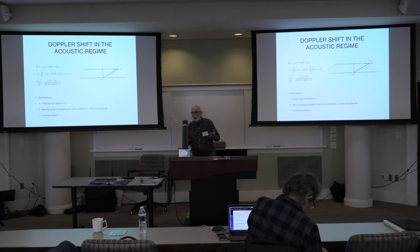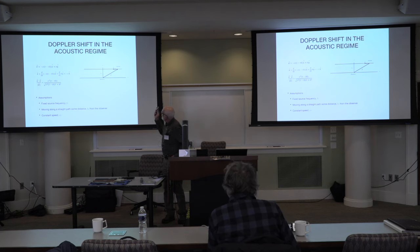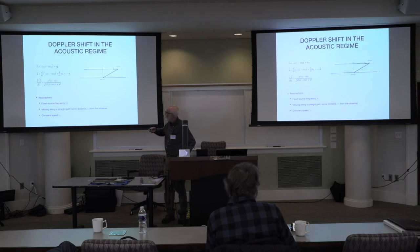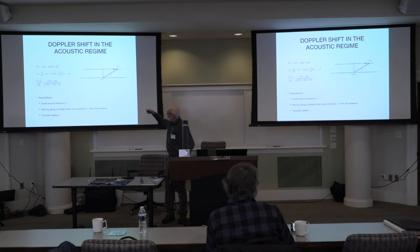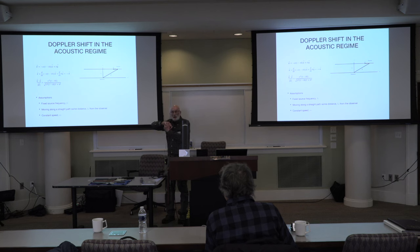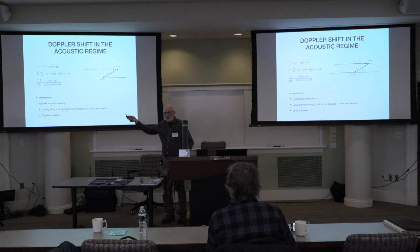It's a simple model. I have a sound source of fixed frequency moving along a straight path some distance away from the observer. By inspection, you can get the position vector; the first time derivative gives you the velocity vector. The scalar product, divided by the length of the position vector, gives you the component of the velocity down the position vector.